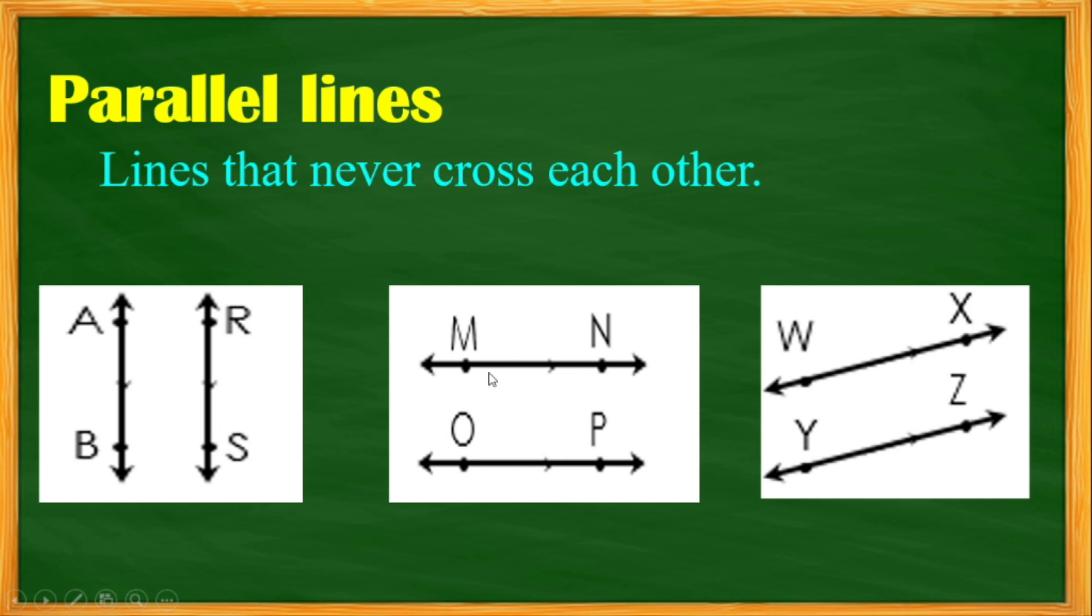Another one is line MN and line OP. Line MN and line OP are not going to meet to cross each other. So this would be a parallel line.